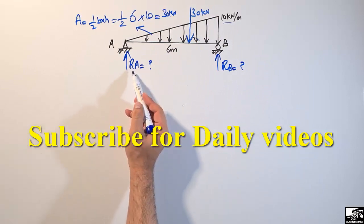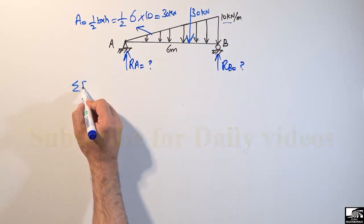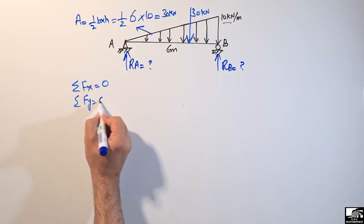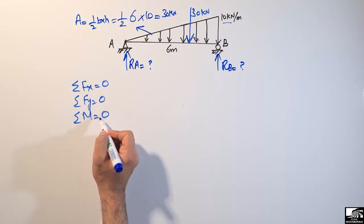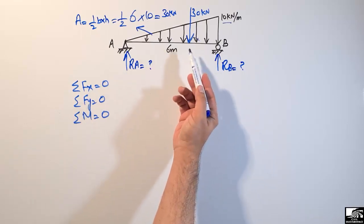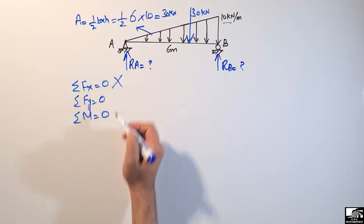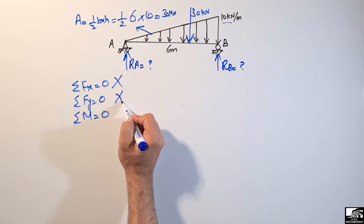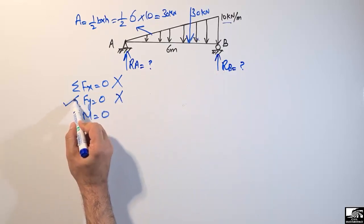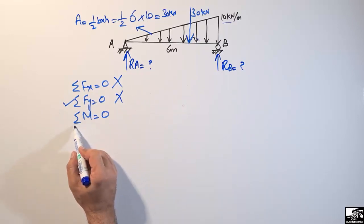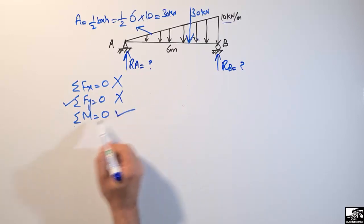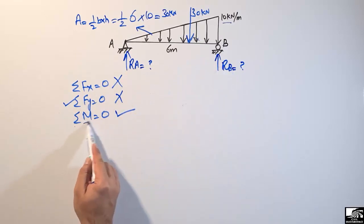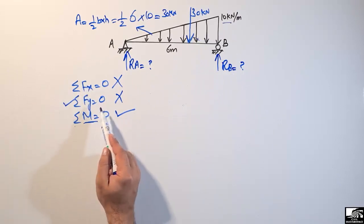To find the support reactions we use the three equilibrium equations: summation of horizontal forces = 0, summation of vertical forces = 0, and summation of moments at any point = 0. Since there is no horizontal load, the first equation is not needed. We have two unknowns, so we will use the moment equation.